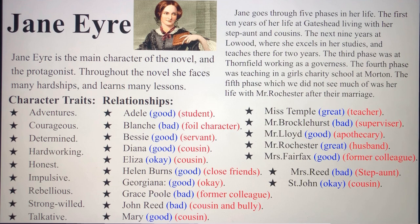For example, in chapter four she stood up for herself to her aunt Mrs. Reed, or when she left Thornfield all alone after what occurred. She is determined — whenever she wanted something she would go for it. For example, she knew the right decision was to leave Thornfield, so she left, and she knew the right decision was not to marry St. John, so she was determined not to marry him.